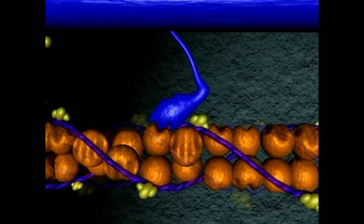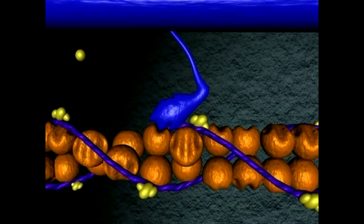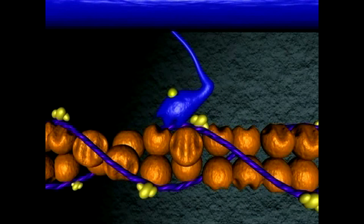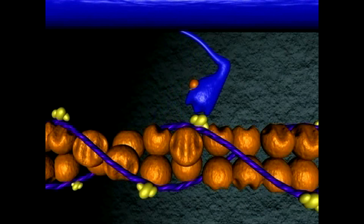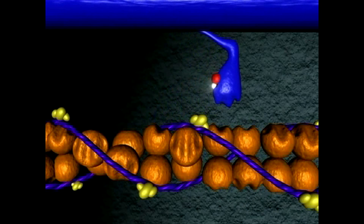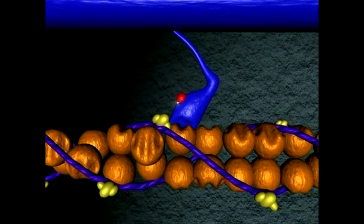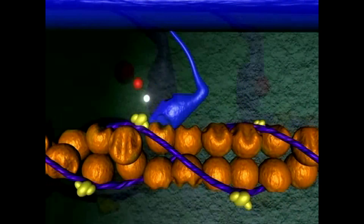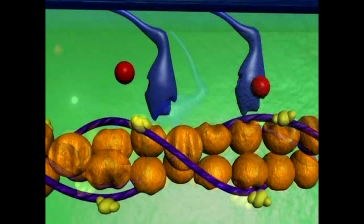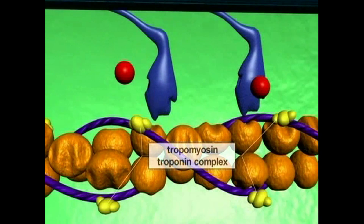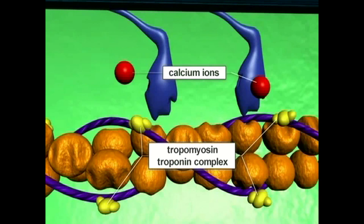The cycle begins anew when another ATP binds to myosin. At rest, most crossbridges are in the cocked configuration, prepared to interact with actin when the tropomyosin-troponin complex is moved away from myosin binding sites on actin by calcium ions.